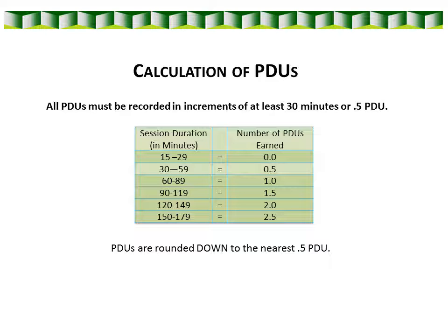So if you attend a 20-minute training session, you cannot earn PDUs for the session. If you attend a 45-minute session, you earn 0.5 PDU. And an hour and 15-minute session will get you one PDU.